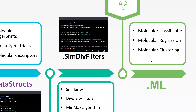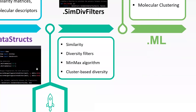The next package is rdkit.ML. This was a surprise when first learning about it — using this package you can perform molecular clustering, molecular classification, regression, and more. That covers the rdkit.ML package.